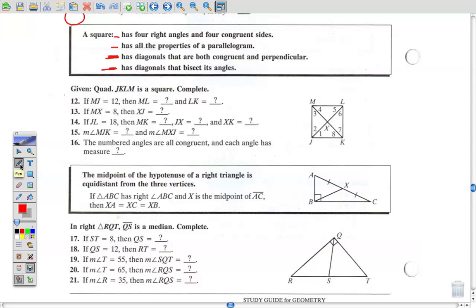Now let's try number 14. If JL is 18, this whole diagonal is 18. And MK, what's MK? Well, the diagonals are both congruent and perpendicular, so MK has to be 18. What's JX? Well, the diagonals also bisect each other since it's a parallelogram, so it's got to be 9. And what's XK? Same thing. It's got to be 9.